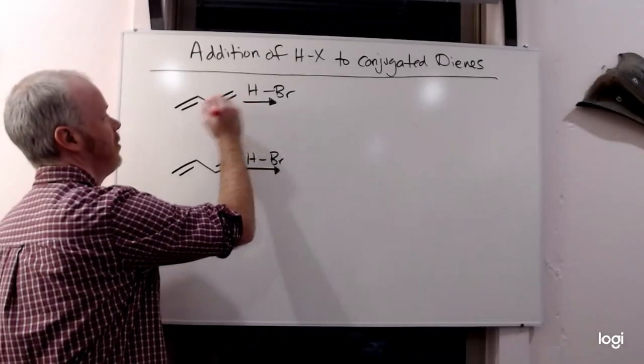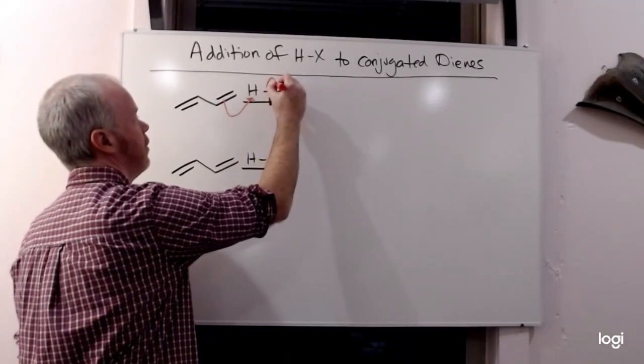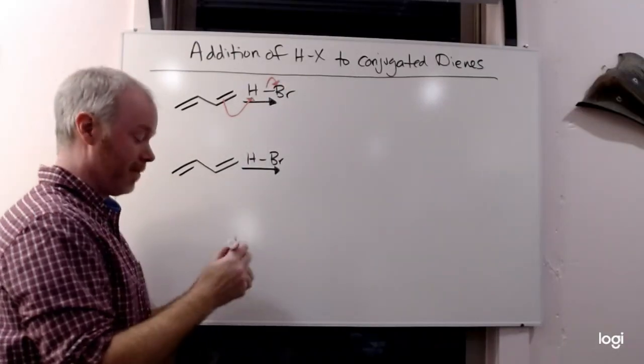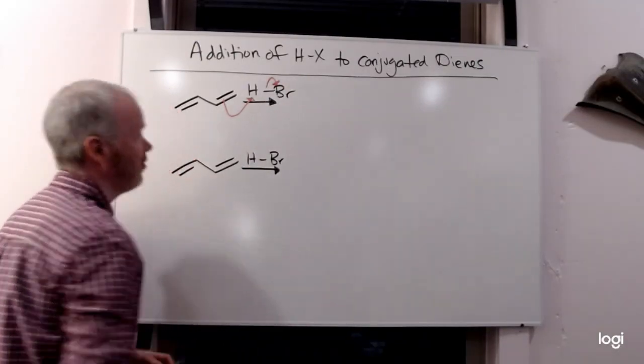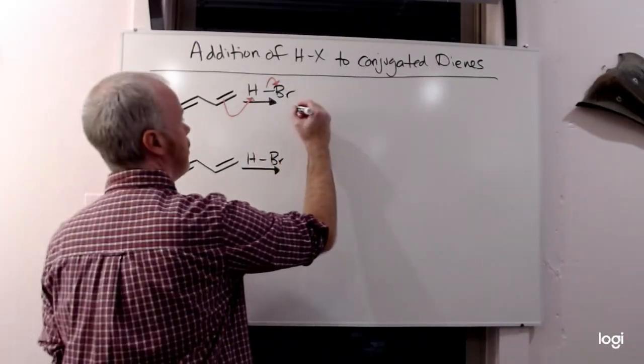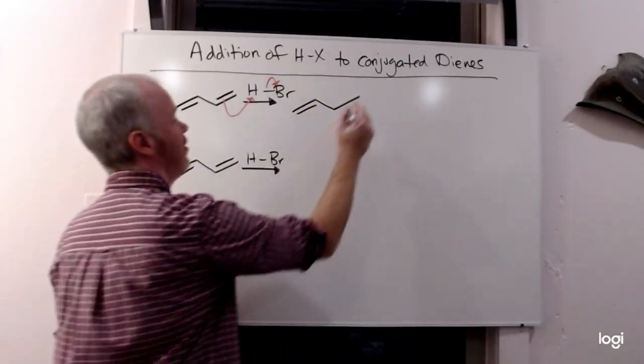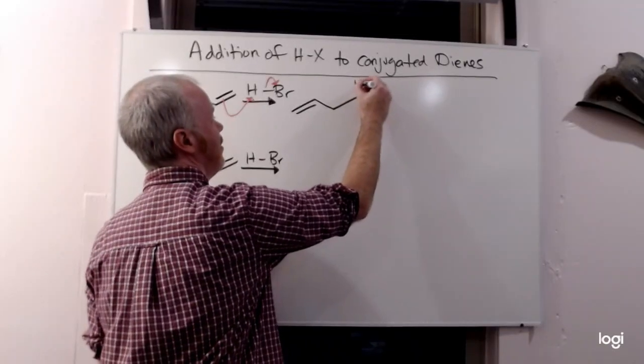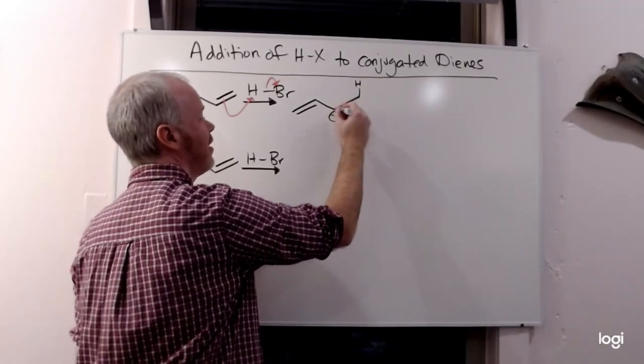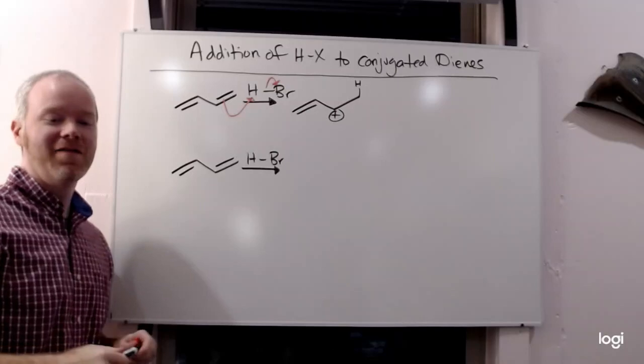Pick one of our two. The pi bonds add to the hydrogen. Then we have our decision of where to put the hydrogen. Putting the hydrogen on the primary carbon gives you the secondary carbocation. That's the better position.